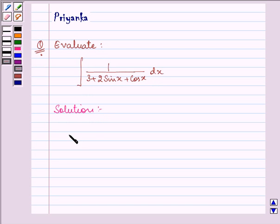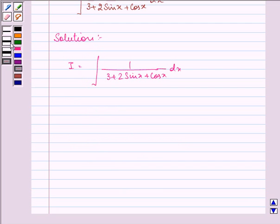So here let I be equal to integral 1 upon 3 plus 2 sin x plus cos x dx. Now here if we put tan x by 2 equal to t we have